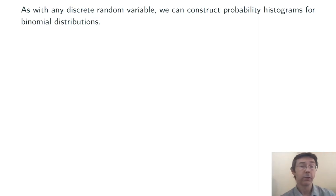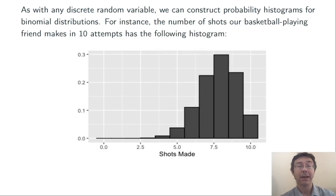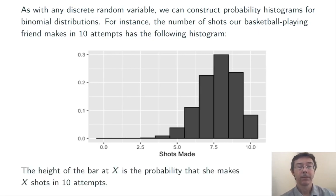As with any discrete random variable, we can construct probability histograms for binomial distributions. Still sticking with that basketball player who has a probability of success of 0.78 and is shooting 10 shots, we get this probability histogram. We get a bar for every x value between 0 and 10, and the height of that bar is going to correspond to the probability that she makes that number of shots in the 10 attempts. So for example, here we can see that the probability that she'll make 8 shots is going to be around 0.3.